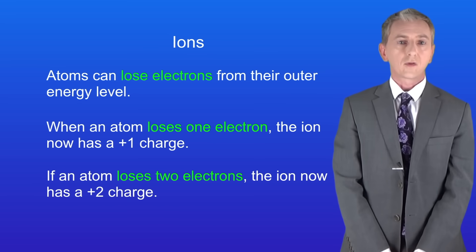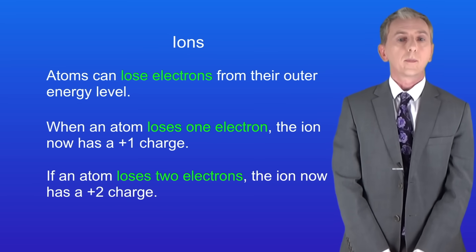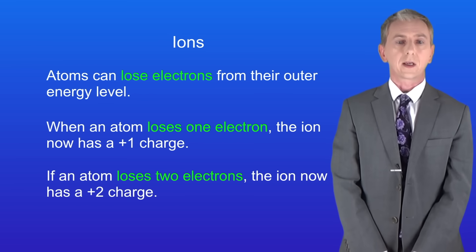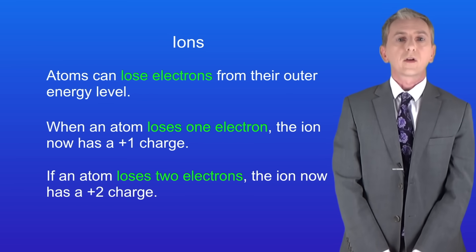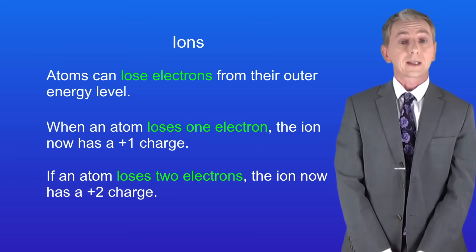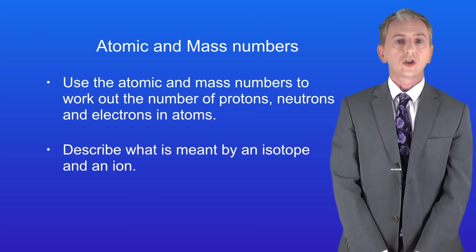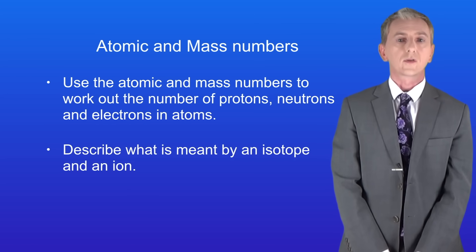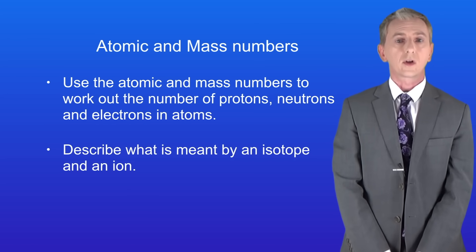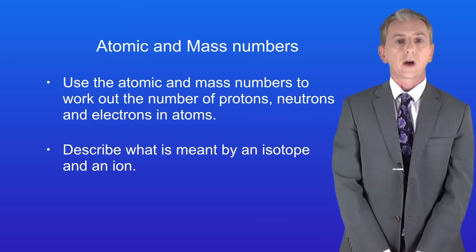In chemistry we saw that atoms can also gain electrons to form negative ions, but that's not required in the physics specification. Remember you'll find plenty of questions on atomic and mass numbers, isotopes and ions in my revision workbook, which you can get by clicking on the link above. Hopefully now you should be able to use the atomic and mass numbers to work out the number of protons, neutrons and electrons in atoms, and describe what's meant by an isotope and an ion.